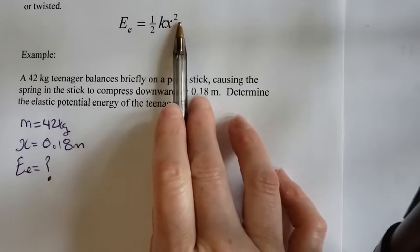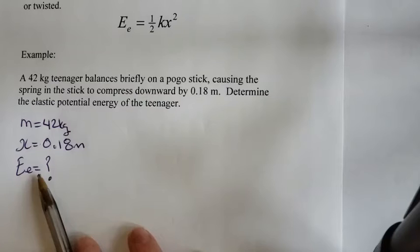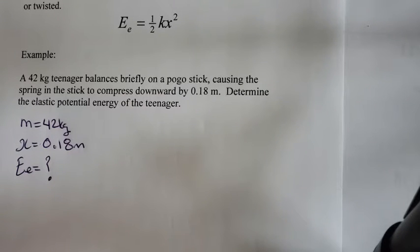Well, I know from the formula that EE is equal to one half KX squared. I have the X, but I don't have my K. So the first thing I need to do is actually calculate my K.